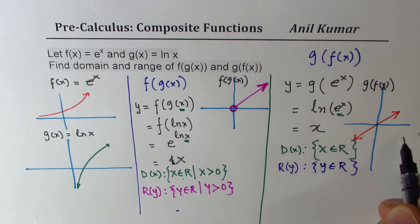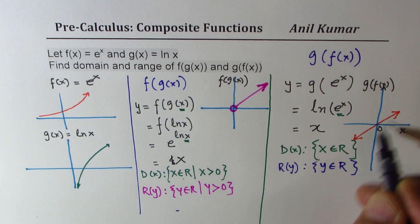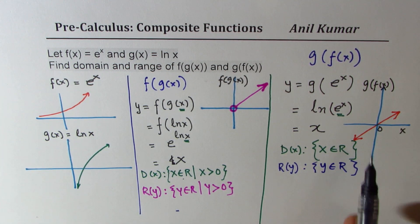It goes through the origin as seen here in this particular diagram. So that is a huge difference.